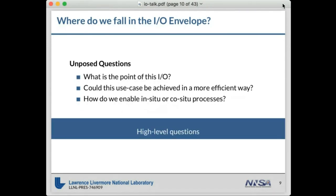The unanswered questions here are: What is the point of this IO in the application? Are they writing the right things? Is the IO they're doing really contributing to science? Is there a more efficient way to do this IO? With a bigger supercomputer, can you do some in-situ analysis to decrease the amount of IO you have to do? When an application asks how to do better with IO, I ask what are you doing already - if they don't know, we have to get on the same page.